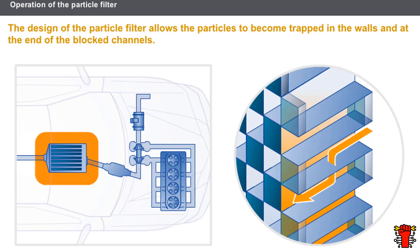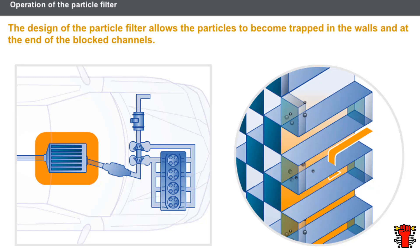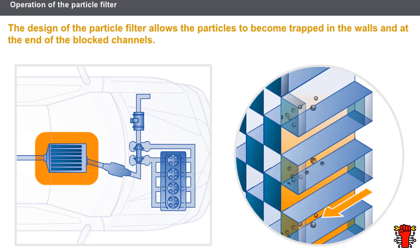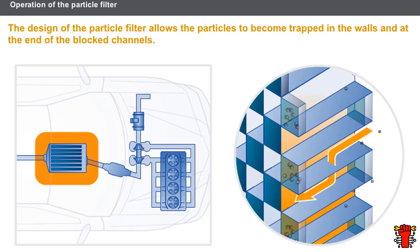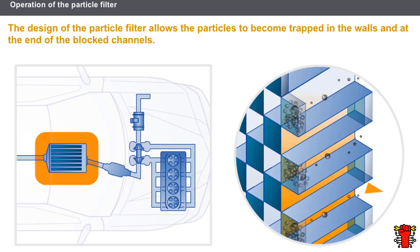When the engine is running, the exhaust gases pass through the ceramic block. The particles are trapped in the walls and at the end of the blocked channels. This phase is called the collection phase. The injection computer permanently monitors the mass of particles contained inside the filter.